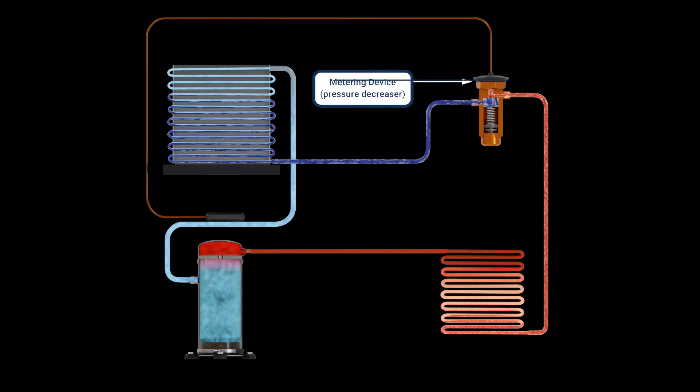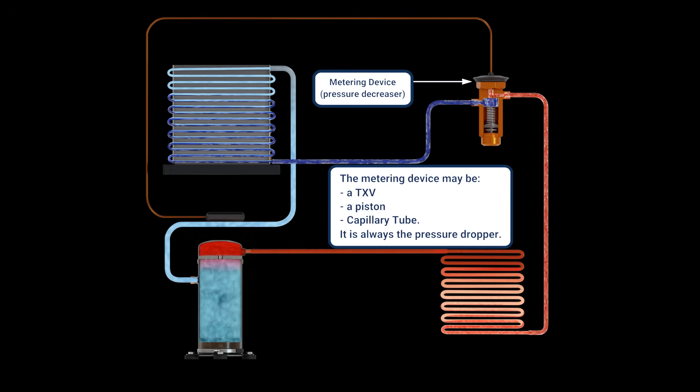This metering device may be a TXV, an electronic expansion valve, a piston, or a capillary tube, or some other device, but it's always the pressure dropper or pressure decreaser.